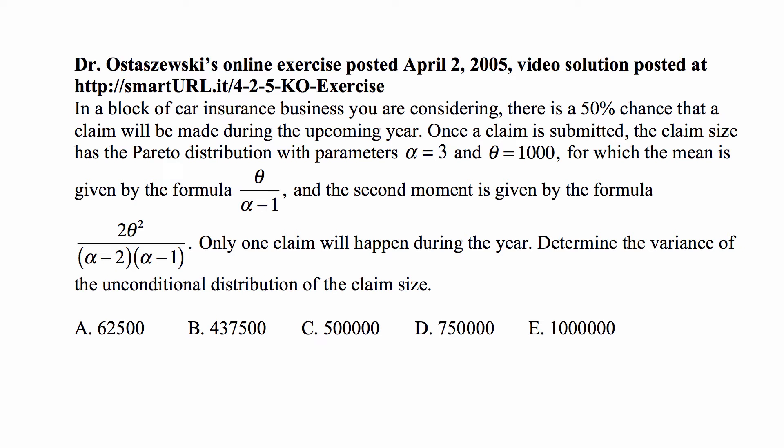Once a claim is submitted, the claim size has the Pareto distribution with parameters α = 3 and θ = 1000, for which the mean is given by θ/(α-1) and the second moment is given by 2θ²/[(α-2)(α-1)].